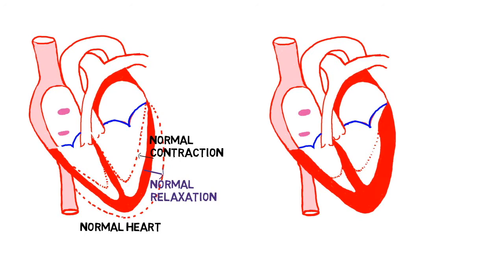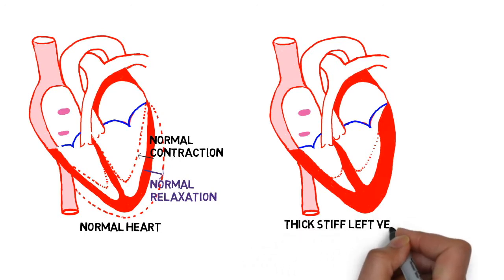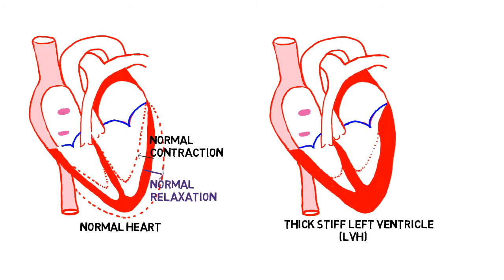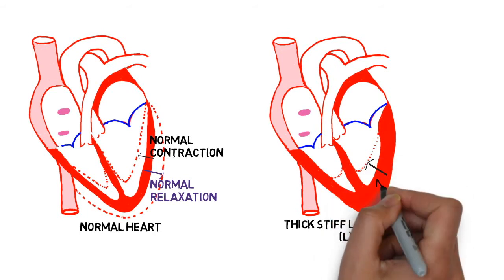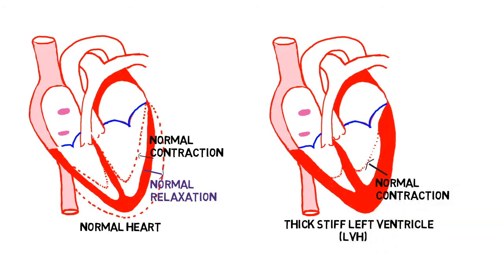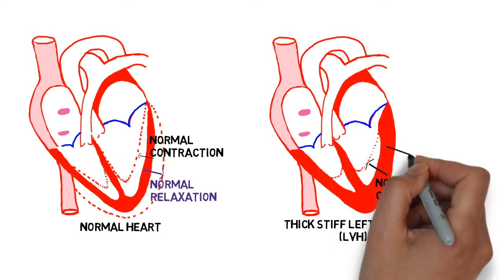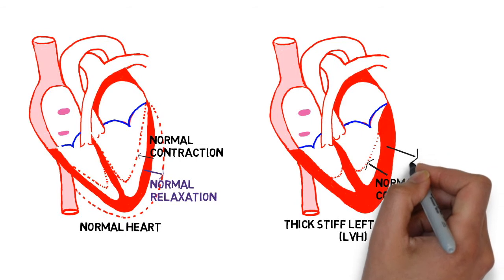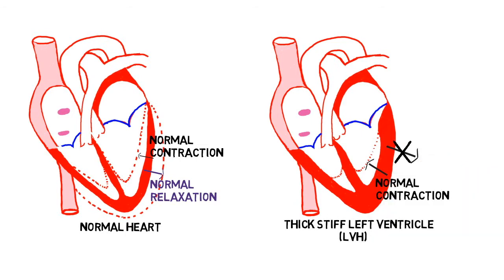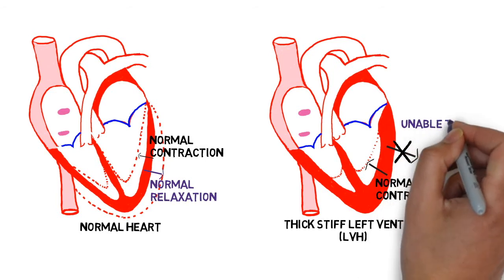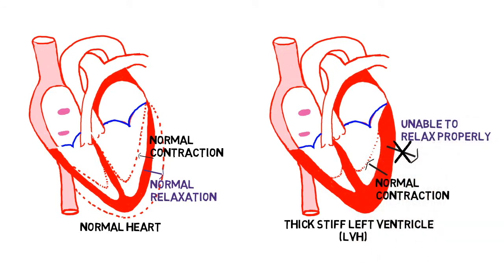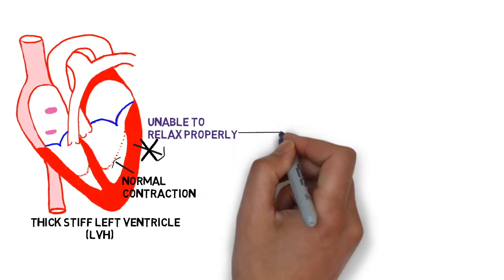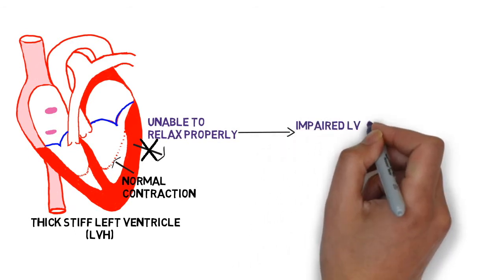Here we have a heart that is thick and stiff — this is left ventricular hypertrophy. This heart has no problem contracting, so contraction is normal. The problem is that because it is so stiff, it can't relax properly. If the heart is unable to relax properly, it can't fill properly, as it is receiving blood from the left atrium.